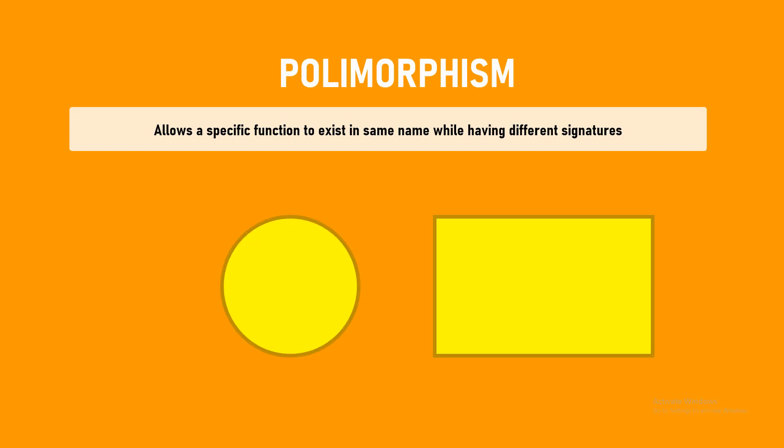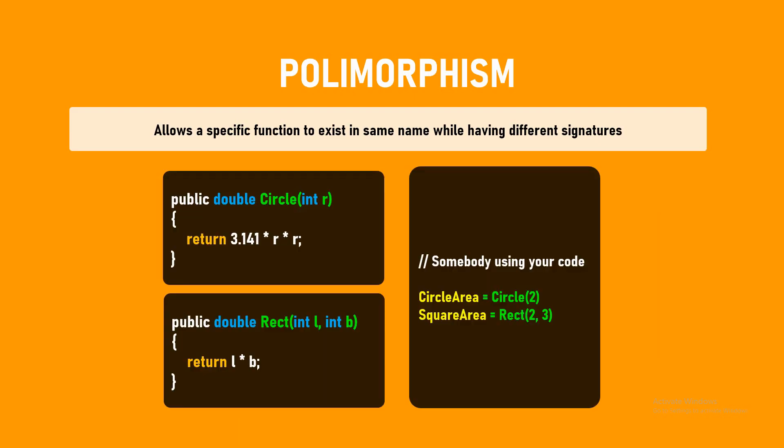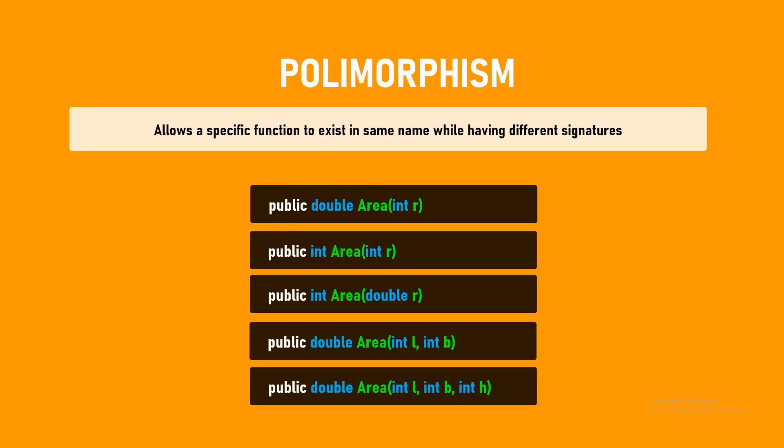Imagine you want to find the area of a circle and a rectangle. Normally you would create two functions — one for circle, one for rectangle. For circle, you pass a radius, use the formula pi r squared, and get the area. For rectangle, you pass length and breadth and multiply them. But with polymorphism, both functions can have the same name — area — with different signatures. Let's also see some other examples.